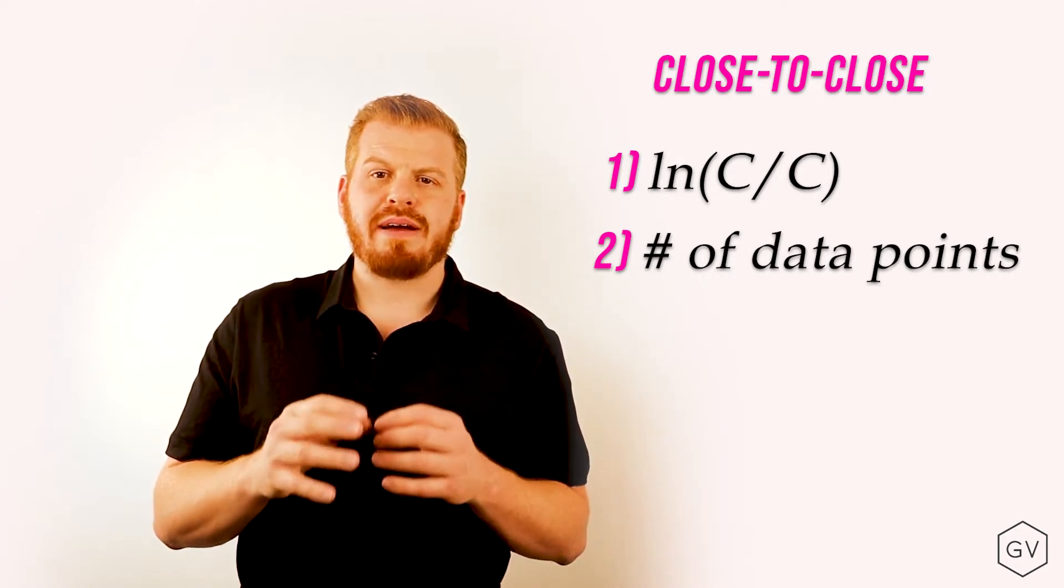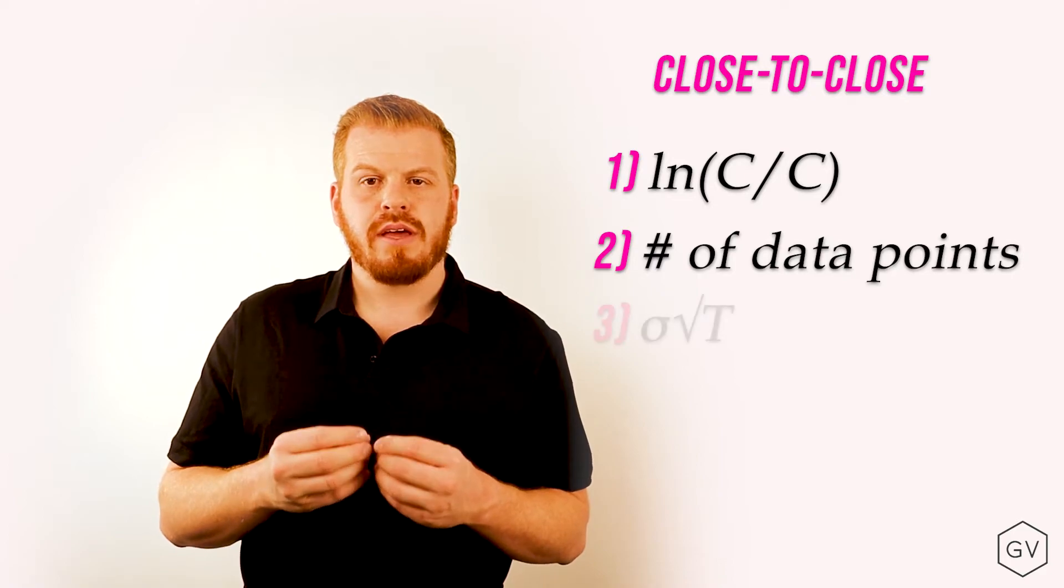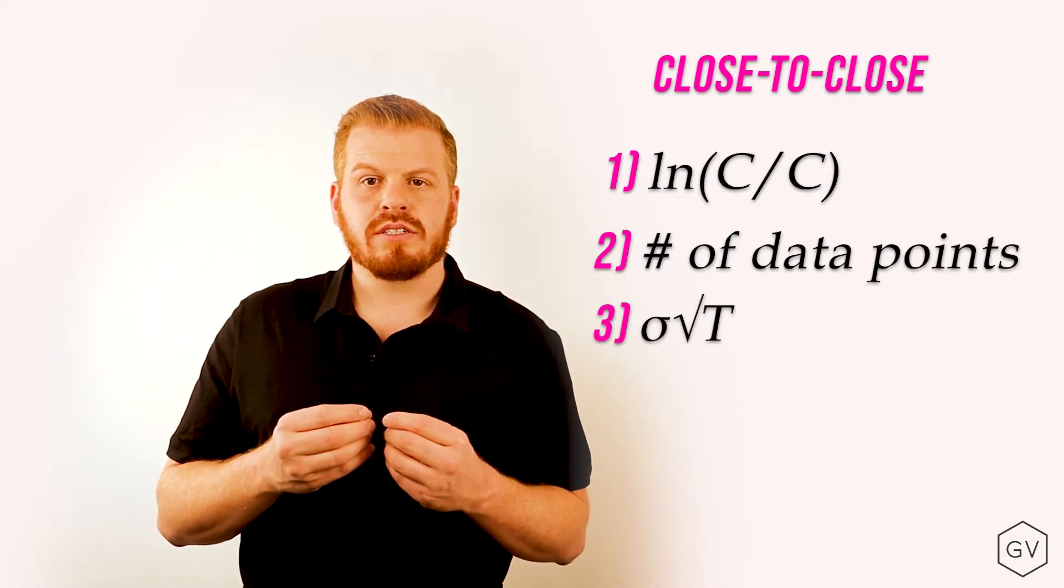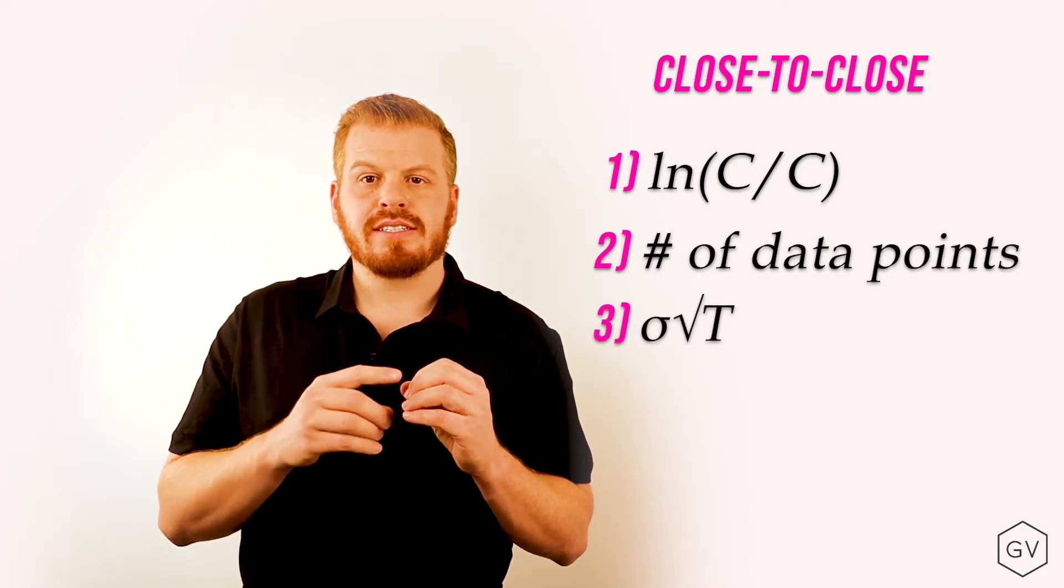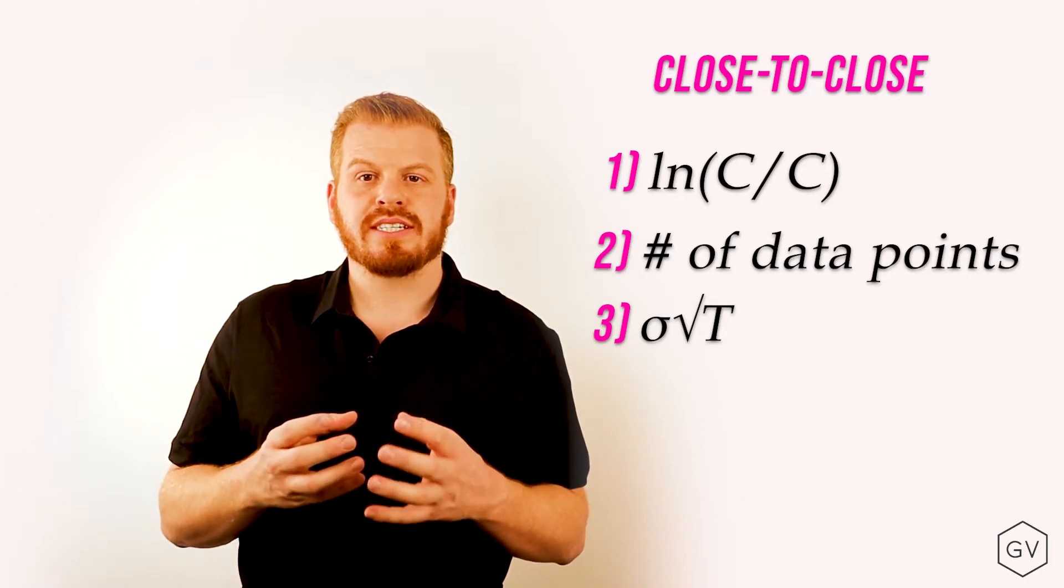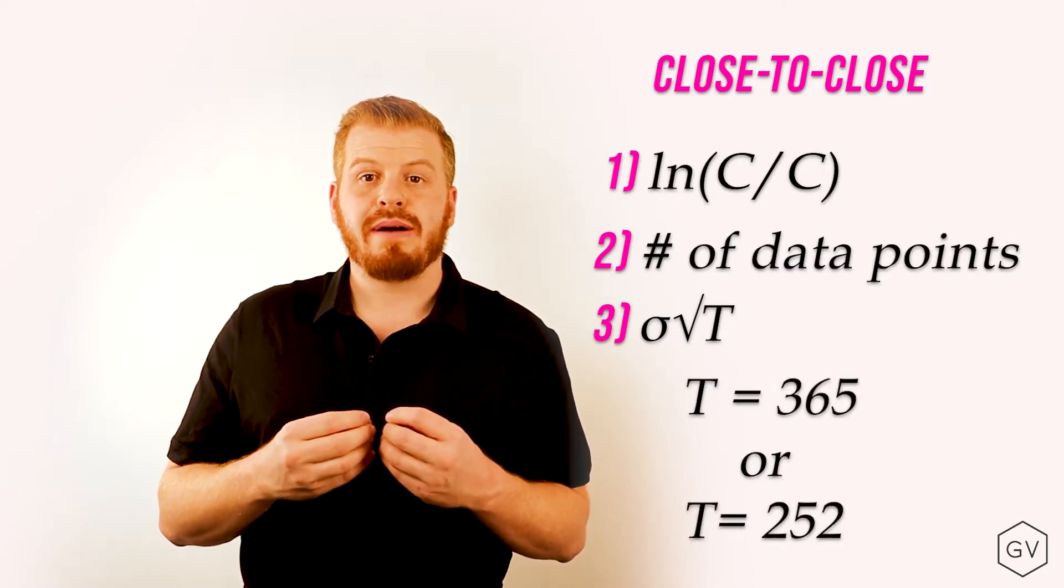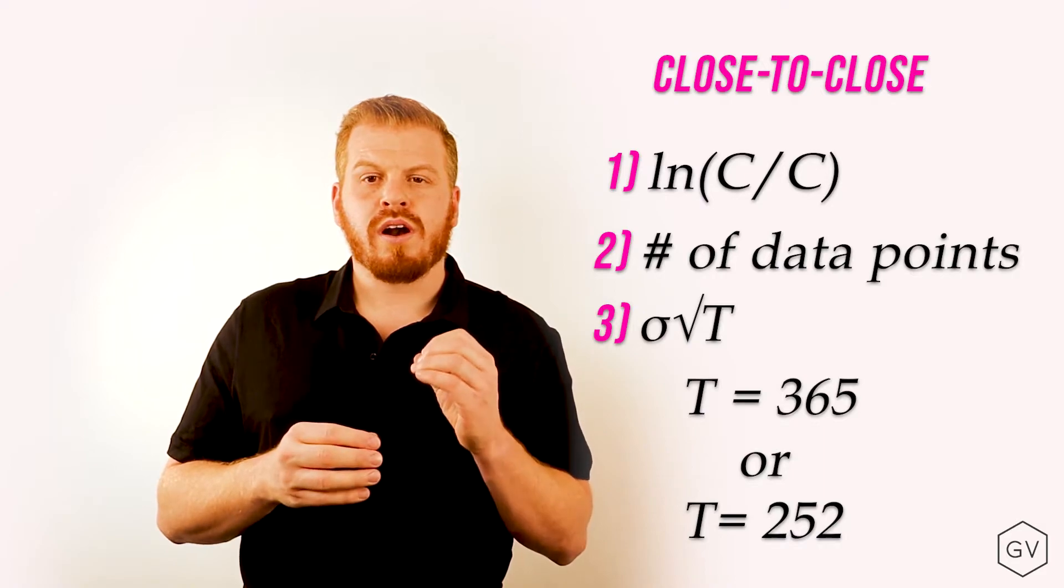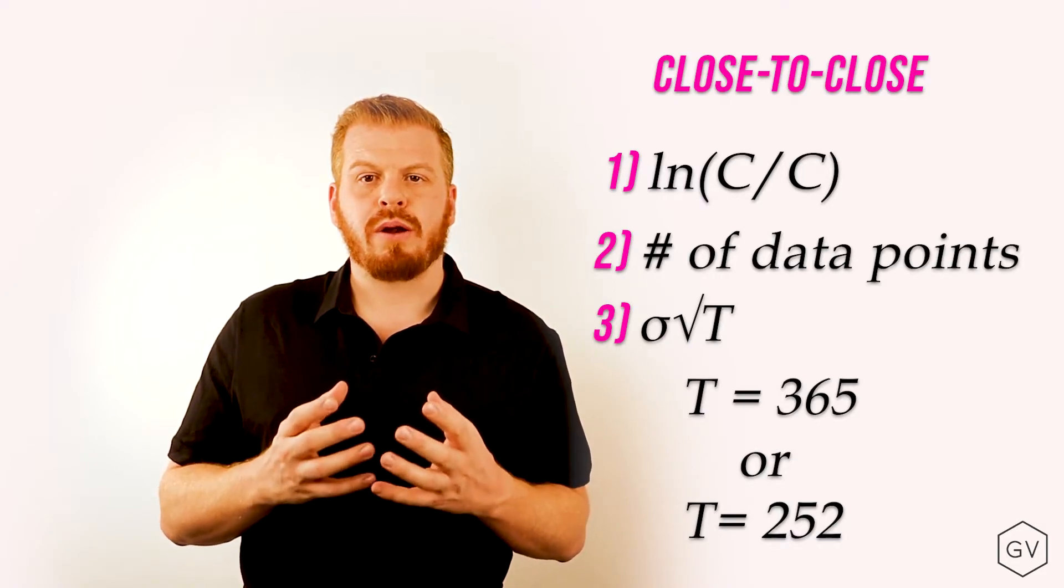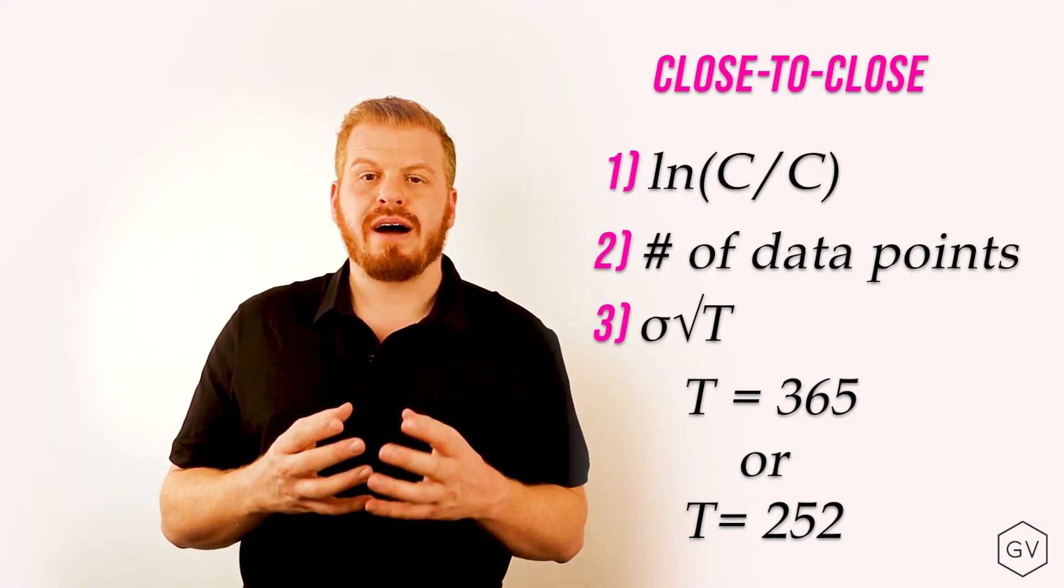The third step after calculating your standard deviation will be to annualize it. Because we're dealing with daily returns, we would take the standard deviation times the square root of 365, which is the amount of calendar days, or standard deviation times the square root of 252, which is the amount of trading days.